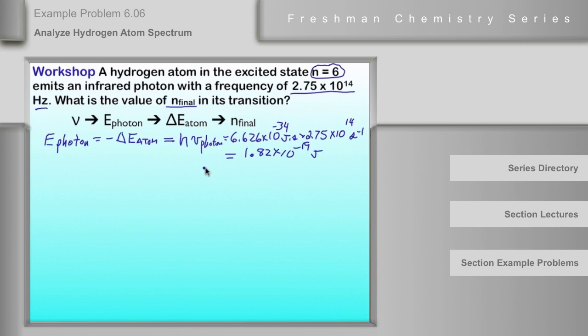Seconds and seconds to the minus 1 will cancel, and that's then going to be equal to minus delta E of the atom. And so delta E of the atom will be minus this number.